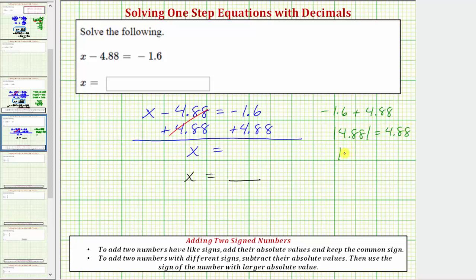The absolute value of negative 1.6 is positive 1.6. Now we'll subtract, and we always subtract the smaller absolute value from the larger absolute value. So we'll have 4.88 minus 1.6.